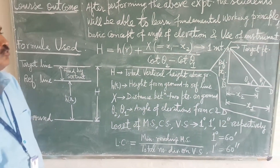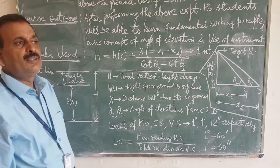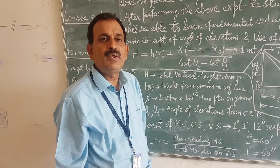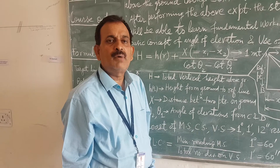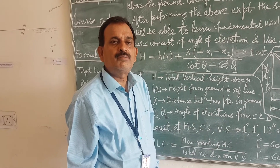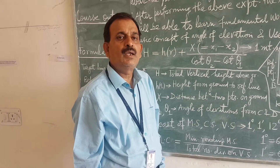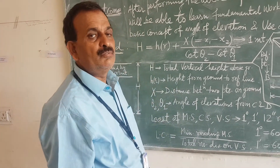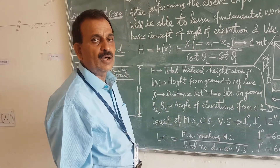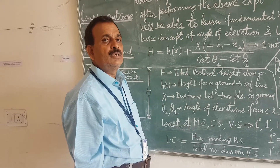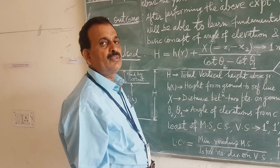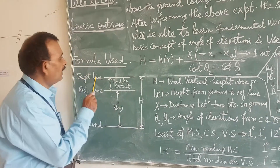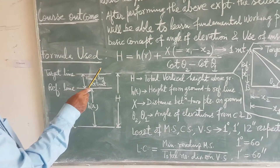The fundamental working principle of the sextant is keeping the angle of incidence constant. If we are rotating the mirror by an angle theta, then the reflected ray is turned by the angle 2 theta. What is the special feature of the sextant? Without touching the lines or object, by measuring the angle of elevations, we can find out the vertical height.